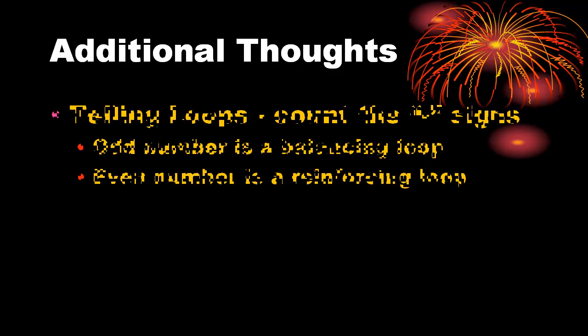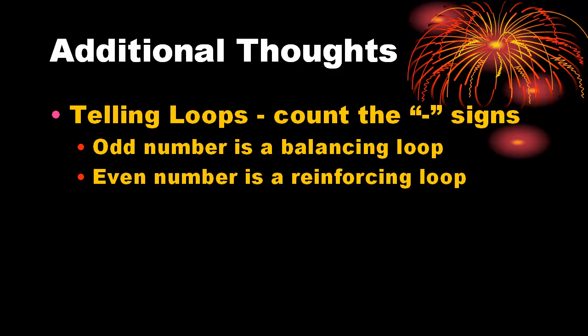It is quite easy to tell one loop from another if one simply counts the number of negative influences around a loop. If the number is odd, then the loop is a balancing loop. If the number is zero or even, then the loop is a reinforcing loop.